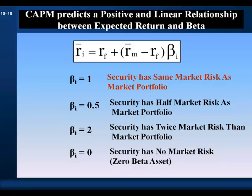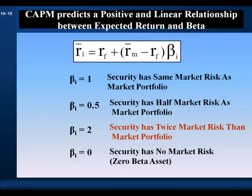When beta equals 1, the security has the same market risk as the market portfolio. When beta equals 0.5, the security has half the market risk of the market portfolio. When beta equals 2, the security has twice the market risk of the market portfolio. And when beta equals 0, the security has no market risk — it's a zero-beta asset.